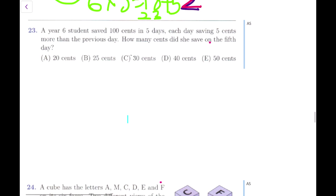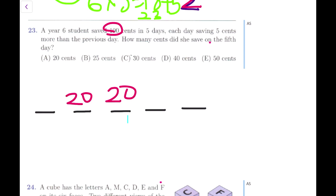Question number 23. A year 6 student saved 100 cents in 5 days, each day saving 5 cents more than the previous day. How many cents did she save on the 5th day? This question is a tricky one. We know she's not saving the same amount each day. If she was saving the same amount each day, she would save 20 cents each day, since 20 times 5 is 100.